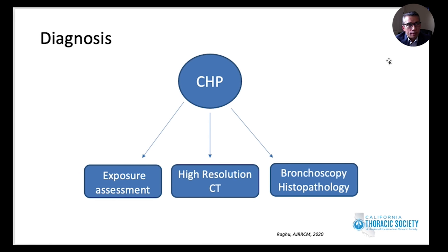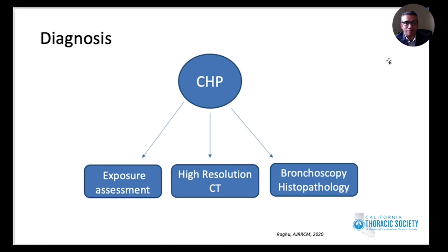So how do we make a diagnosis? There are three main diagnostic domains for hypersensitivity pneumonitis: accurate assessment of exposure, imaging evidence of certain radiological changes, and bronchoscopy and pathology. Based on these three areas of information, we make a diagnosis of chronic hypersensitivity pneumonitis.